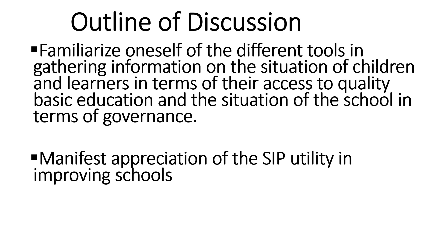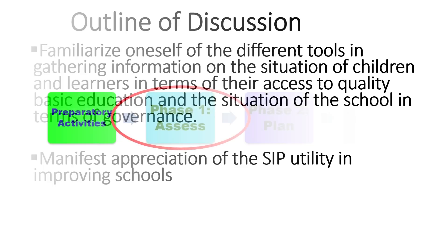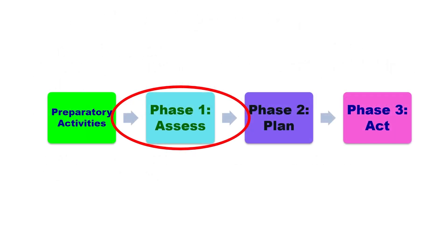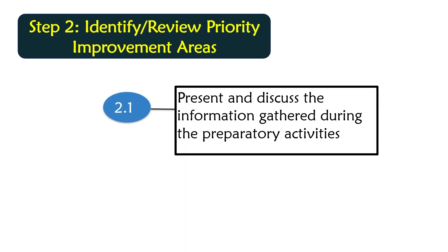We're also going to talk about how to manifest appreciation of the SIP utility in improving schools. Right at this point, we are already in phase one, or what we know as assess. In part one, we discussed the preparatory activities that you as a school leader should do in order to be ready for phase one. So what are the specific steps under phase one or assess? This is step two now, because we have already conducted the preparatory activities in the first part.